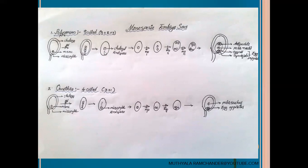The remaining three megaspores are degenerated or disappeared. The chalazal end megaspore participates in mitotic division to form two nuclei. After the first mitotic division forming two nuclei, these again participate in the second mitotic division to form four haploid nuclei, which then participate in the third mitotic division to form eight haploid nuclei. Four haploid nuclei are present at the micropylar region and four at the chalazal region.